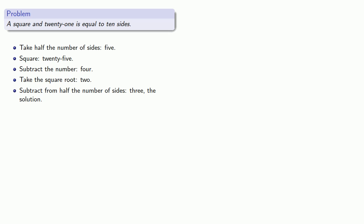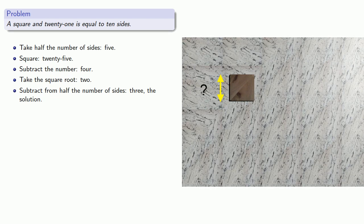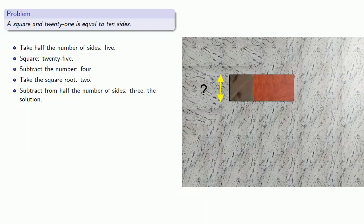So let's look at this geometrically. We have a square with an unknown side length, and we want to add 21 to it. So let's append a rectangle with an area of 21, and we'll make one side of the rectangle equal to the side of the square.